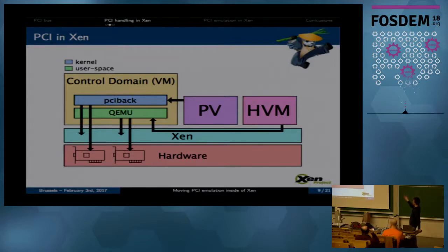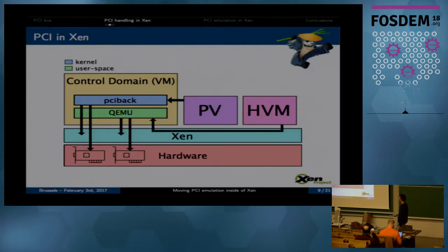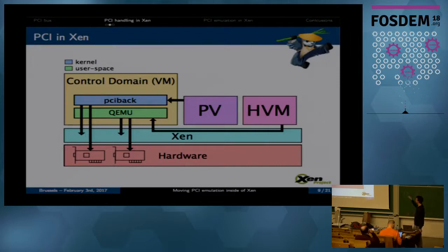For HVM guests, Xen traps accesses to CF8, CFC, and the enhanced configuration space, and we forward these accesses to the device model - to QEMU. We have a platform emulation layer in QEMU. If the device is fully emulated, it will be handled completely inside QEMU, which generates the reply and gives it to the guest. If we have to do pass-through, sometimes the response is generated in QEMU and sometimes we have to fetch it from the real hardware. This is nice because we don't need to modify the guest, but it's much slower because it involves trapping into Xen and then going from Xen to QEMU.